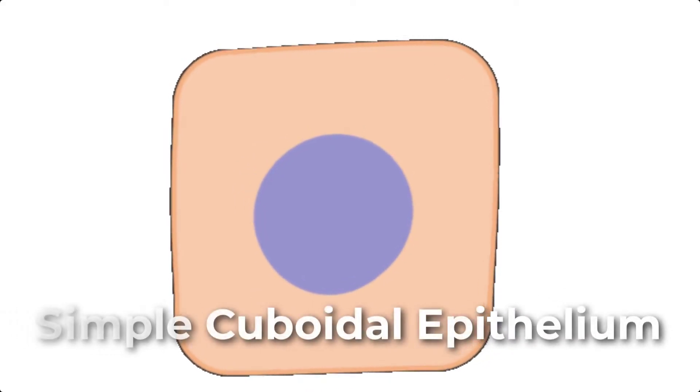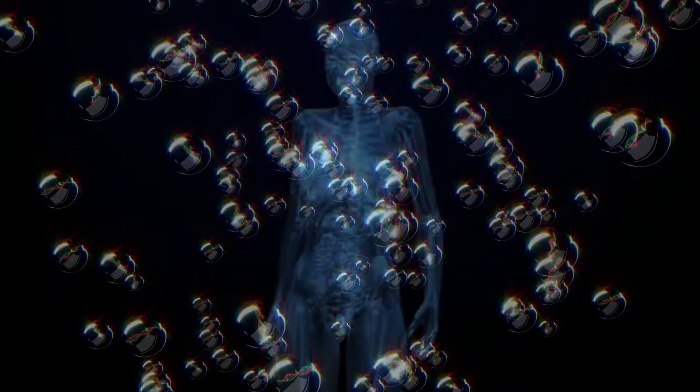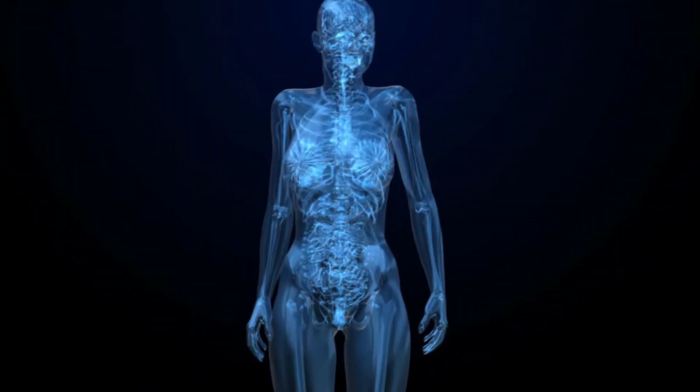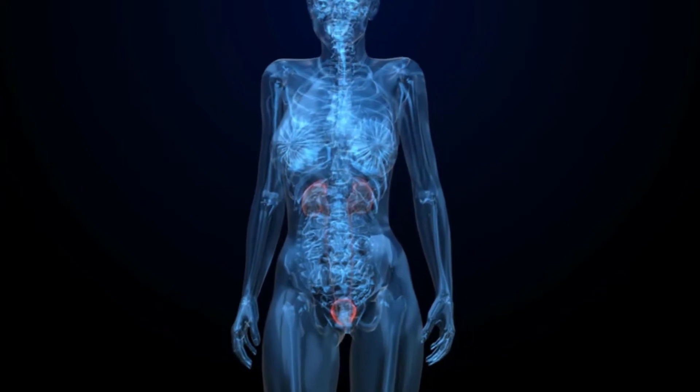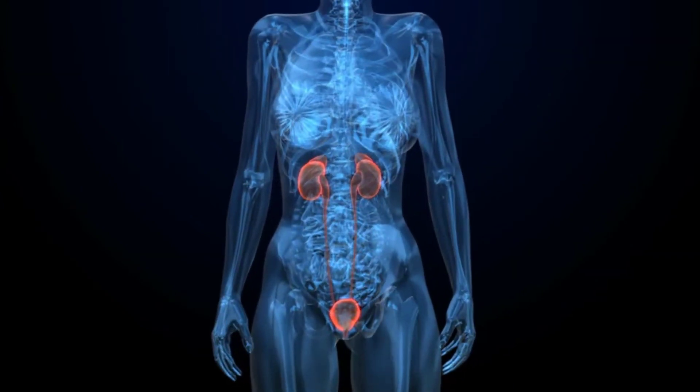In simple cuboidal epithelium, the nucleus of the box-like cells appears round and is generally centrally located. These epithelia are active in the secretion and absorption of molecules. Simple cuboidal epithelia are observed in the lining of the kidney tubules and in the ducts of glands.